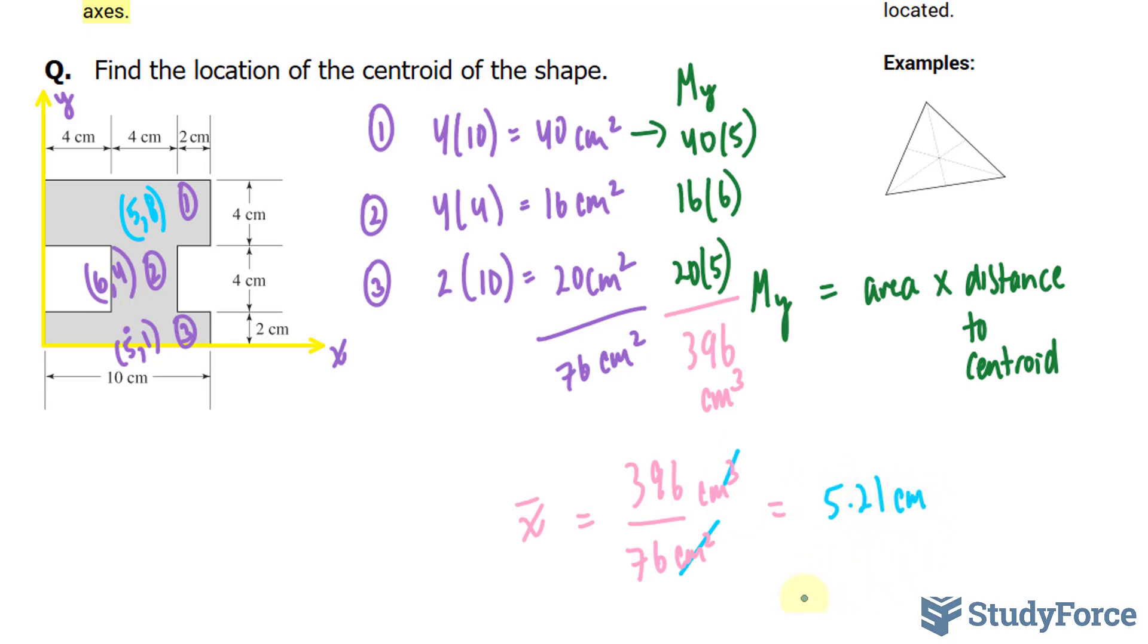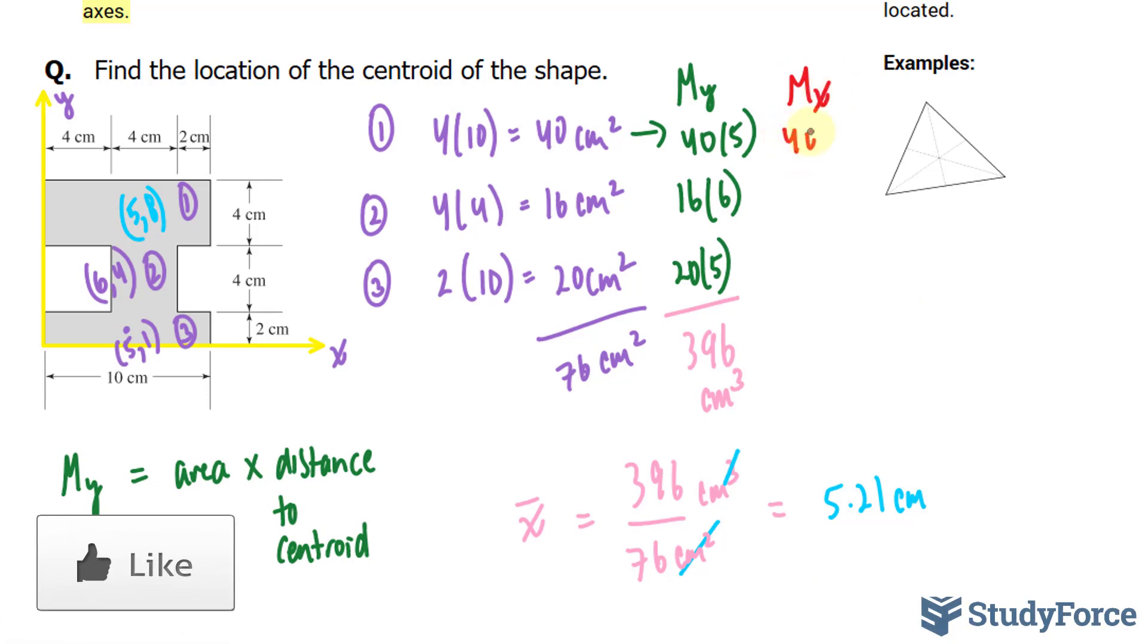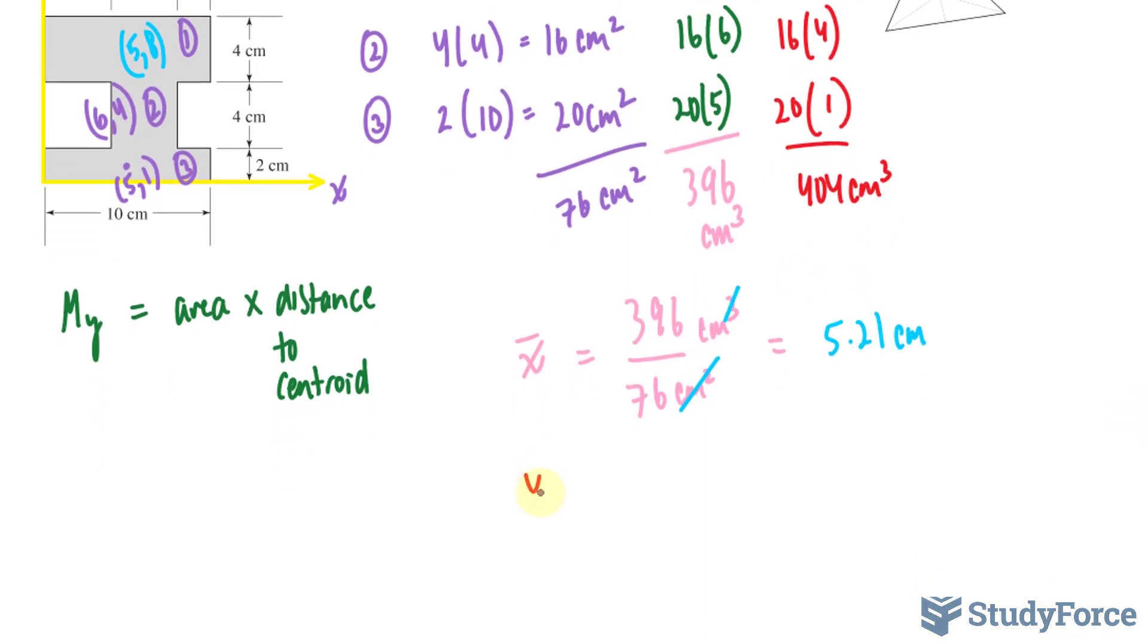We'll now have to do the same thing for the moment about the x-axis. So I'll write down m subscript x. We'll take the area 40 times, this time 8, 16 times 4, and 20 times 1. Multiplying and adding all of these up, we end up with 404 centimeters cubed. Y bar is equal to 404 centimeters cubed over our area, which is equal to 5.32 centimeters.